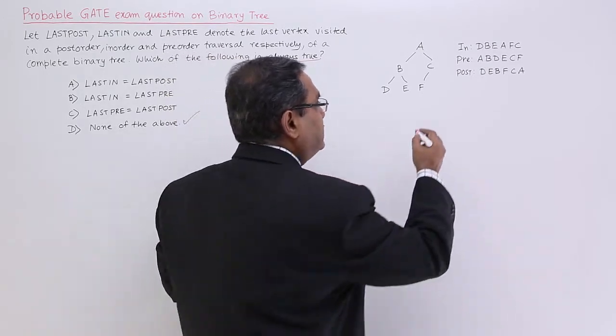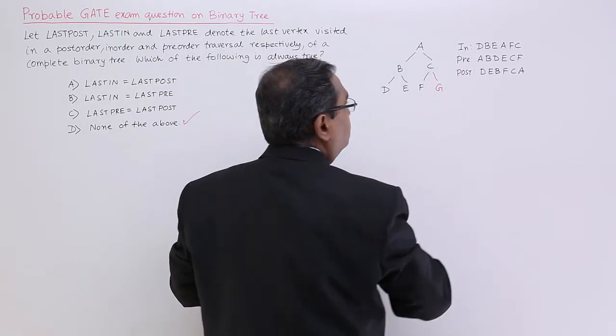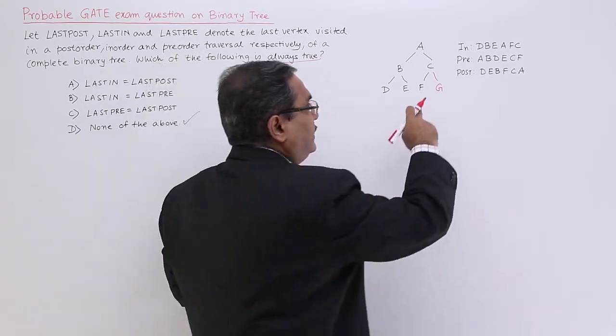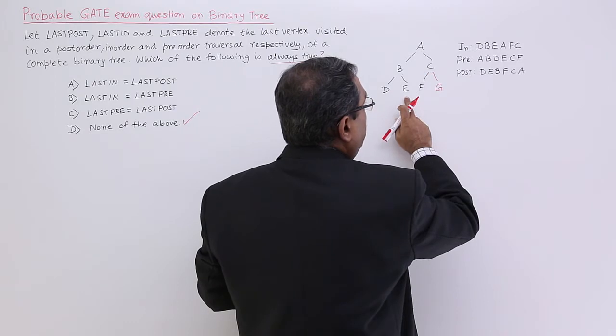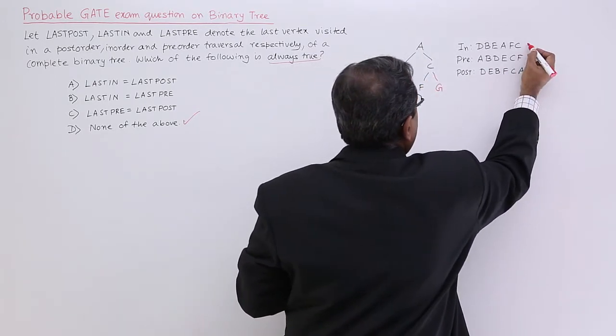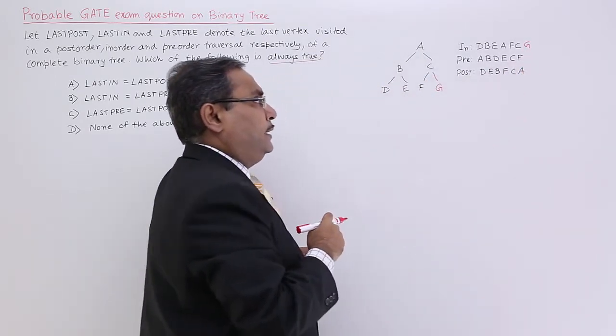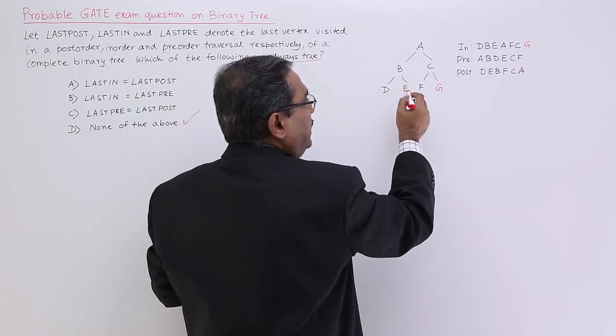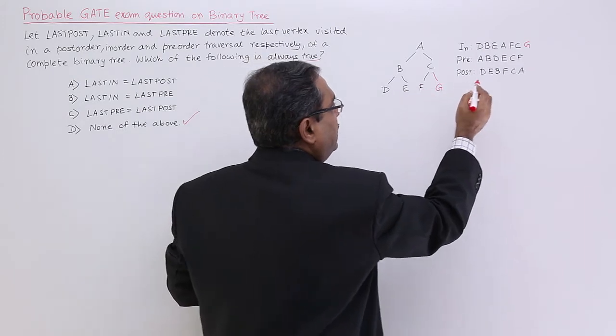But let us suppose I am taking an example like this. Then what will be the traversal in that case? In case of in-order, so this part is okay, this part is okay. So, F, C, G. So, G will come at the last. In case of pre-order, A, B, D, E is okay and then C, F, G will come at the last.